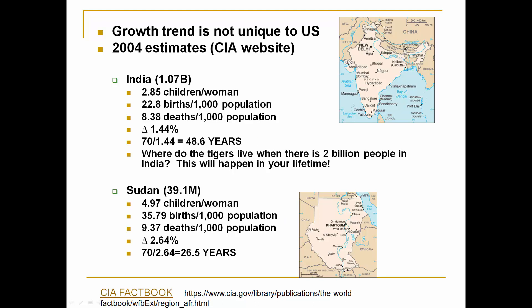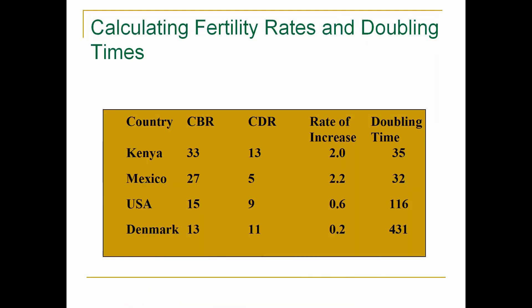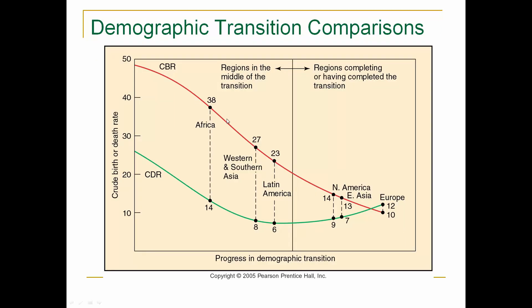Sudan has five children per woman and will double in about 26.5 years. Kenya has a rate of increase of 2.35%. Mexico is 2.2, doubling in 32 years. The USA could double in 116 years. Denmark in 431 years. The demographic transition shows Western Africa, Western and Southern Asia, and Latin America still growing, while North America is slowing and Europe is already showing decline.